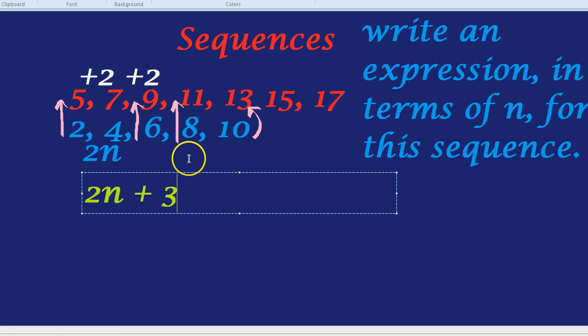We can quickly check that works. If we put n as 1, that will give us the first term in the sequence. 2 times 1 is 2, plus 3 is 5. The second term should be 7. 2 times 2 is 4, plus 3 is 7. So, yes, we have found it.